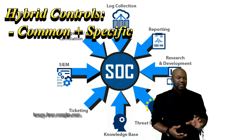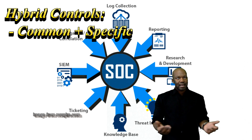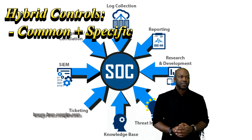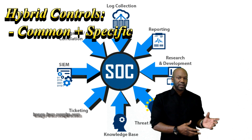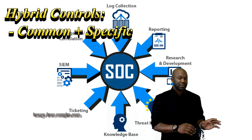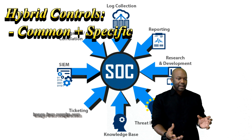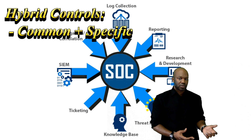A hybrid control is a mixture of system-specific controls and inheritable controls. An example would be IR controls, which deal with incident response. The organization might have a security operations team that monitors all the logs, but they can't monitor logs if the event logs aren't turned on. So it's a hybrid — one part is owned by the information system owner, and the other part is owned by the overall organization, which has the team that analyzes those controls.